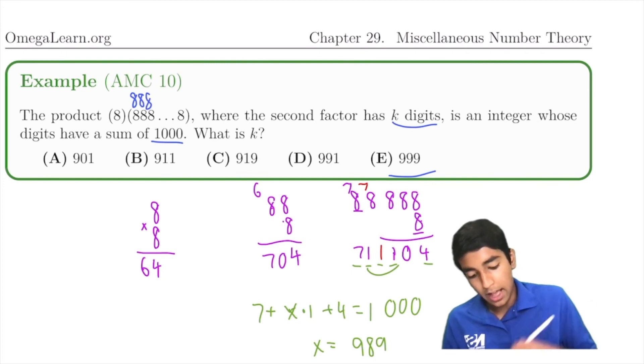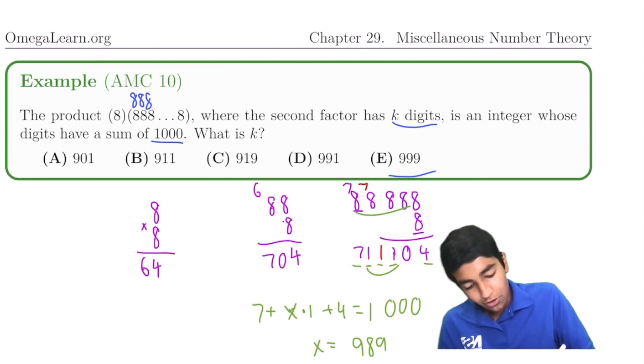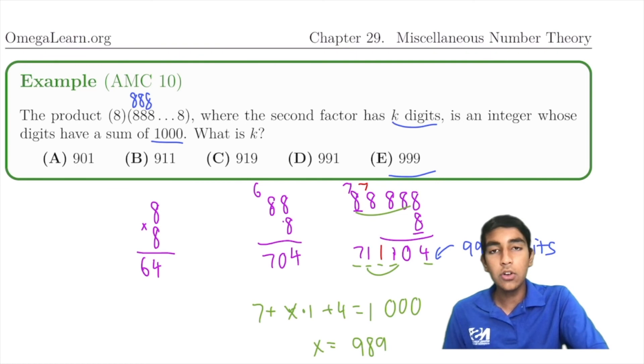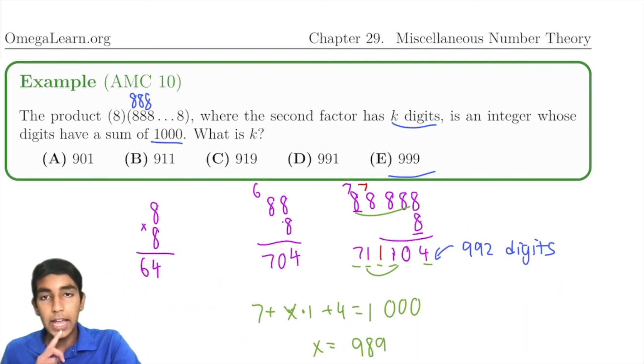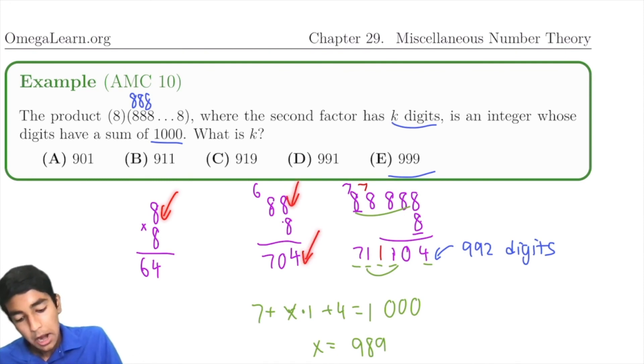Well, first of all, if there's 989 of these 1s, and there's 3 more digits, then there's a total of 992 digits in the product. And if there's a total of 992 digits in the product, then how many 8s are we multiplying? Well, notice here how the product has one more digit than the value. Product 3 digits, value 2 digits. Product 5 digits, value 4 digits. It's always one more. So therefore, this number must be a 991 digit number. So 991 is our answer.